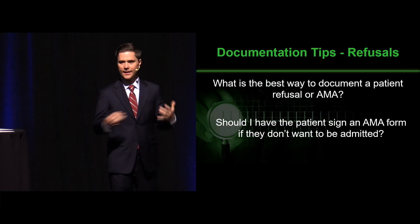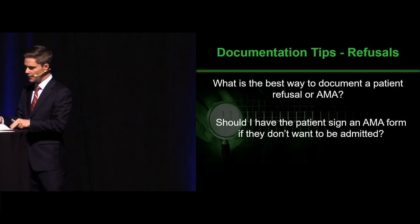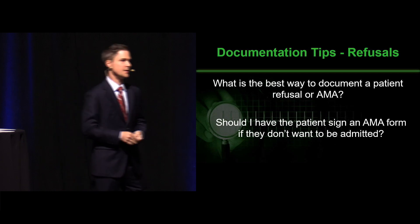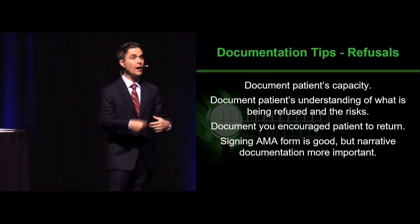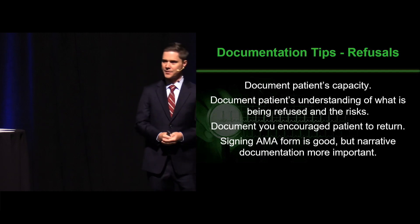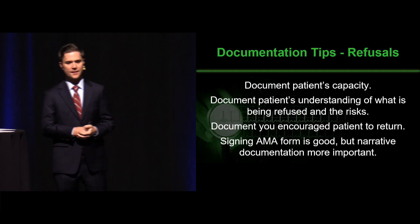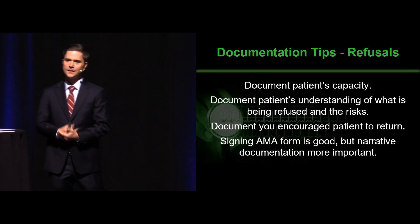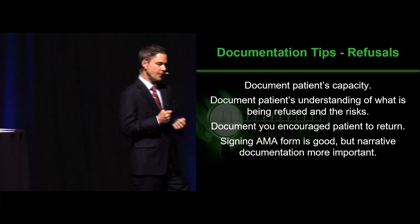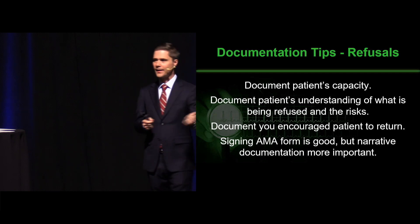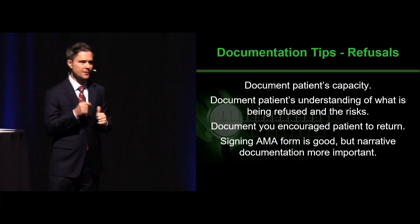We talked about informed refusals and AMAs. What's the best way to document those situations? An AMA form is fine — it can be helpful, but it is not the end-all be-all. We have to have good documentation as to why what you did was reasonable in the face of a patient who demanded to leave. First, did they have capacity? Address objectively why you felt this person had capacity to make this dangerous decision. Explain to them all the information to help them decide whether or not to take this dangerous step.